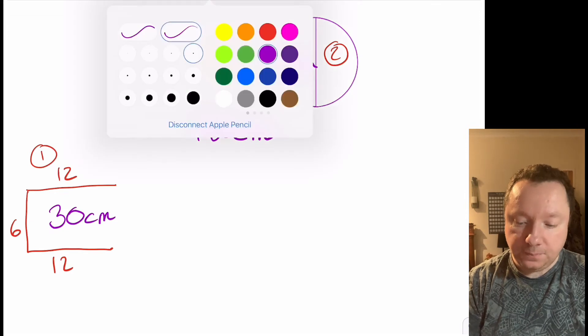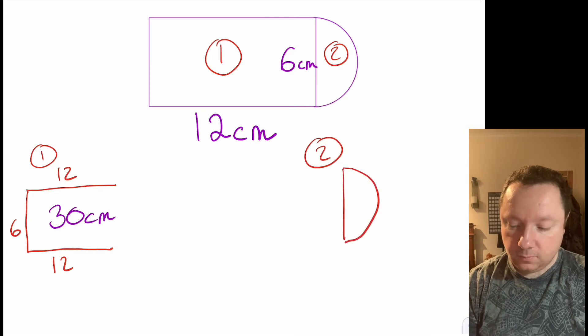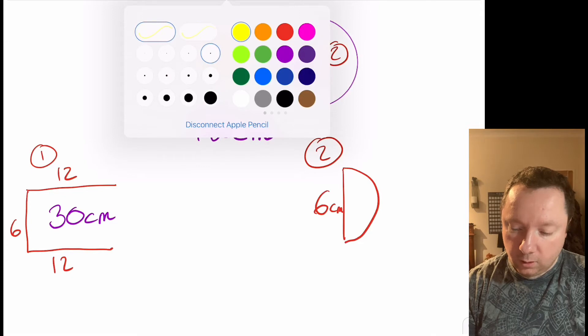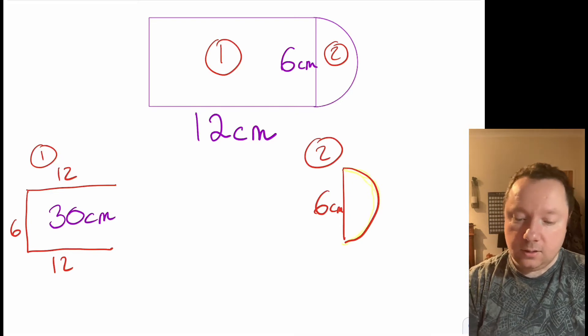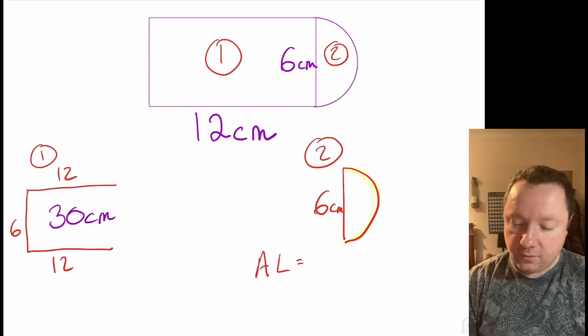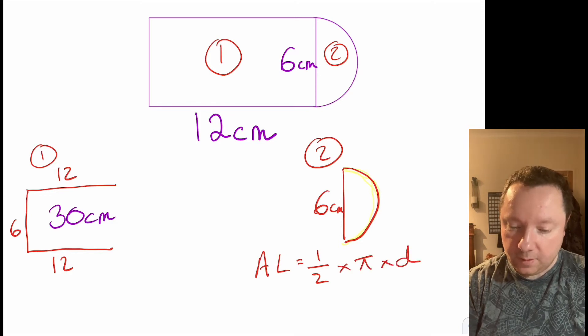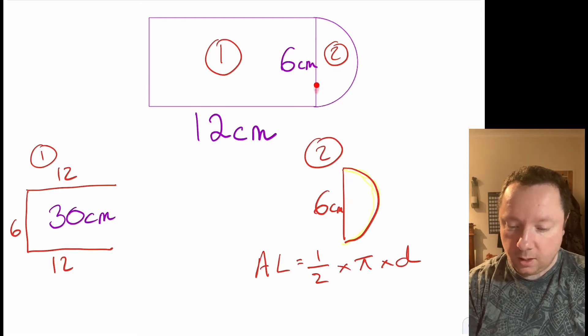Shape two is the trickier one. So if I draw a little sketch for shape two, you've got a semicircle and its diameter is 6 centimetres and we want to work out, if I highlight it, we want to work out just this bit here which remember is called the arc length.